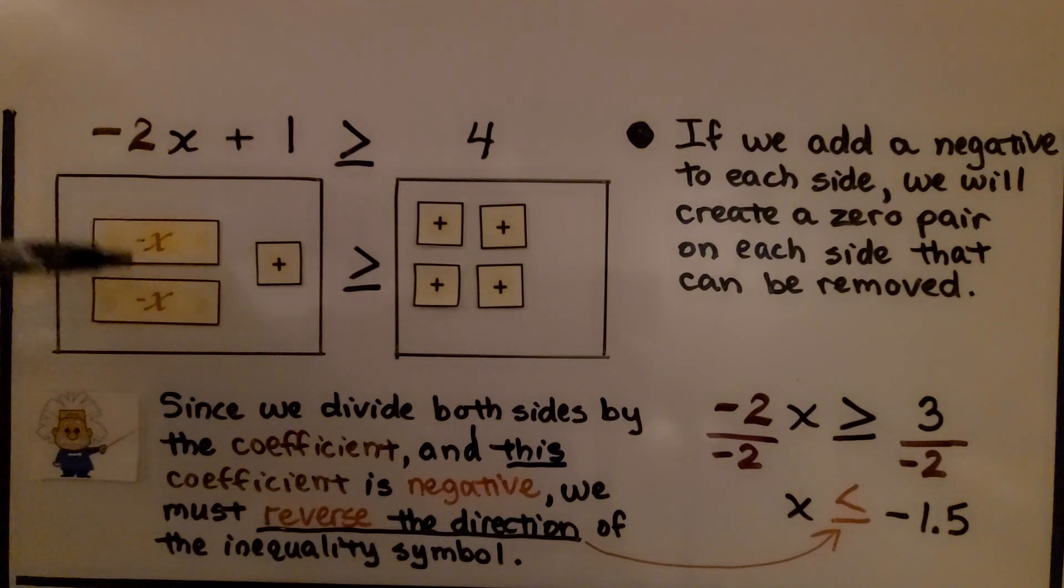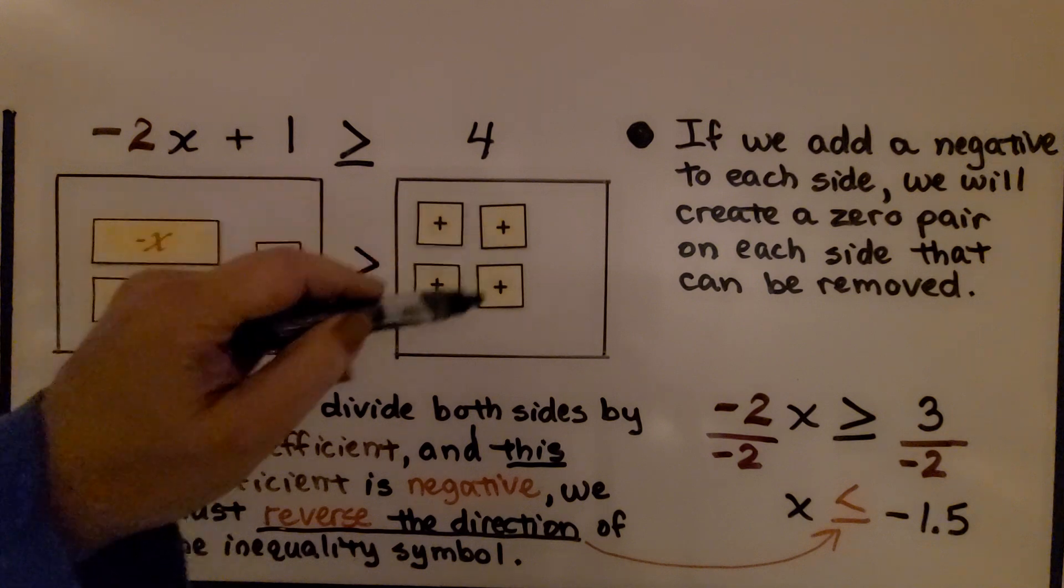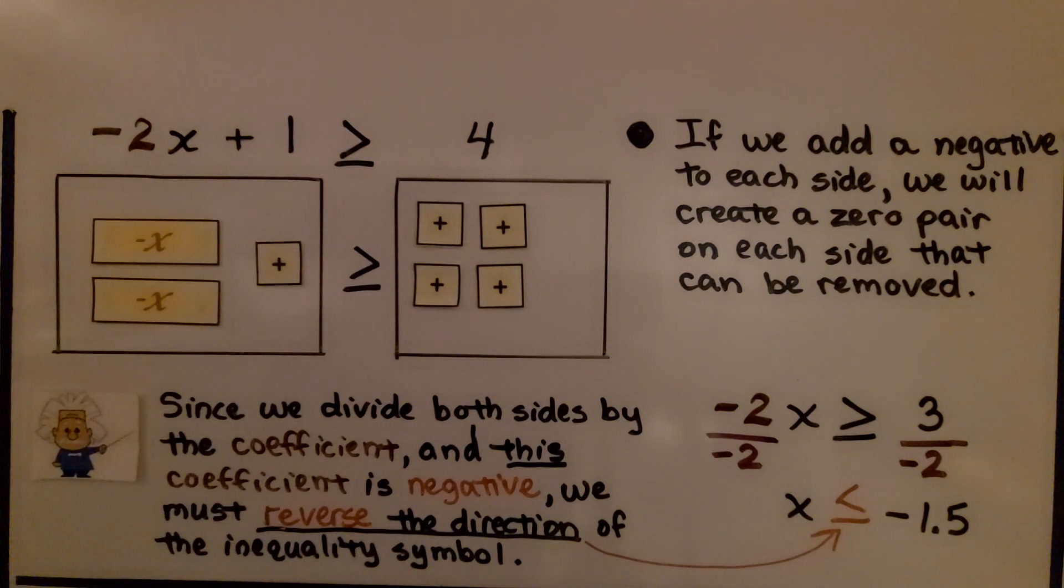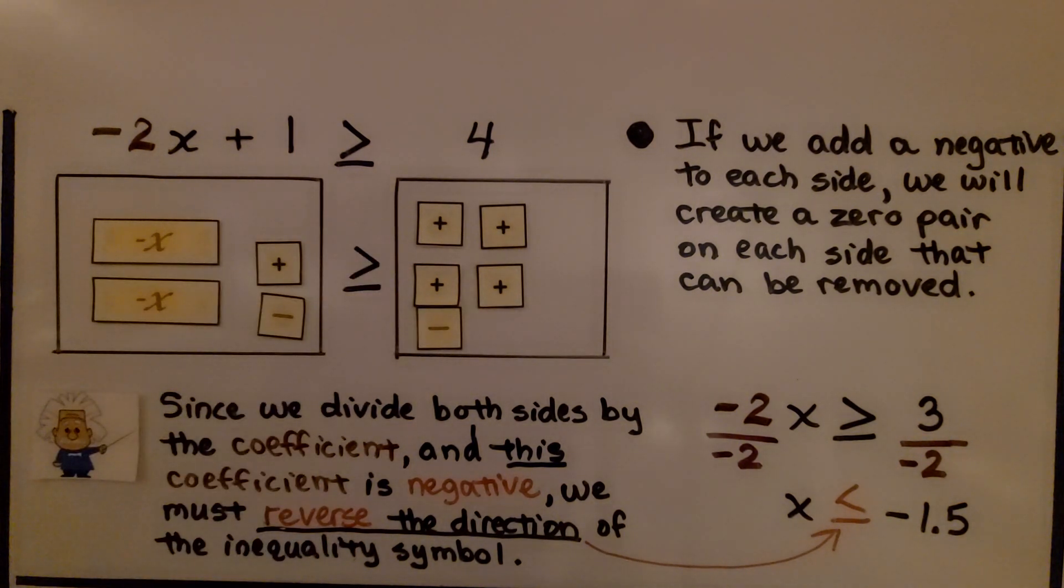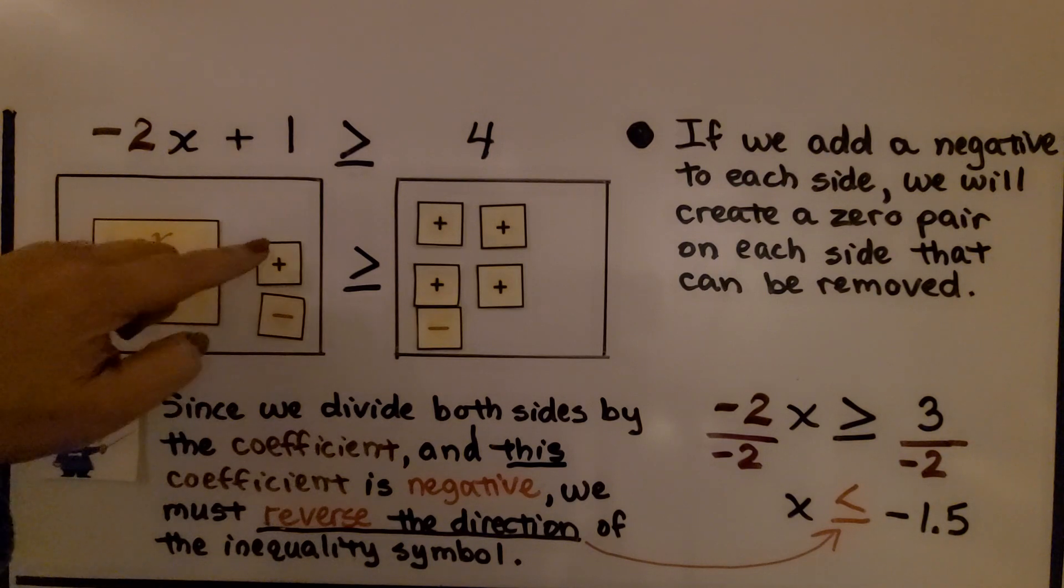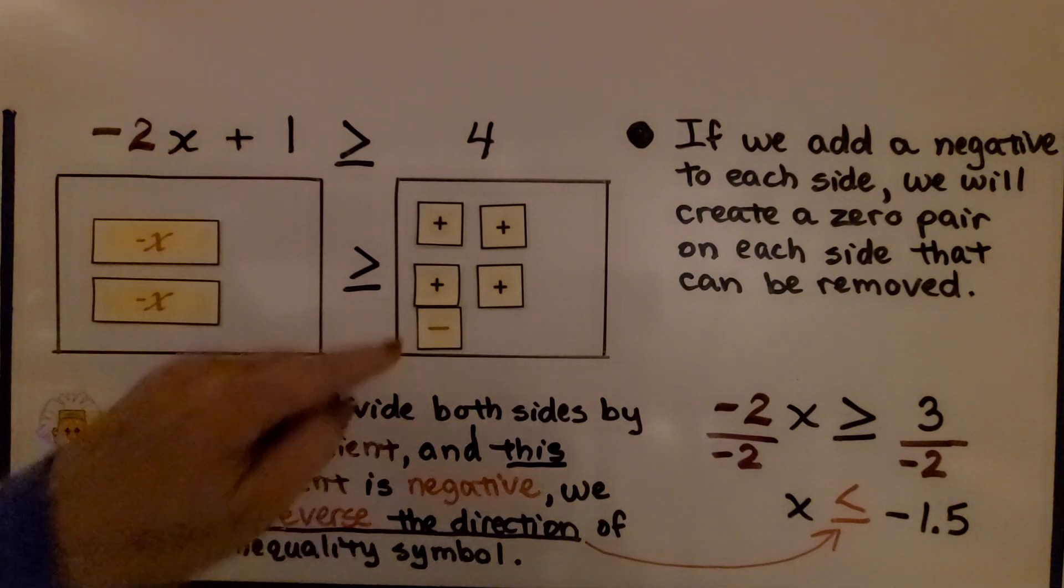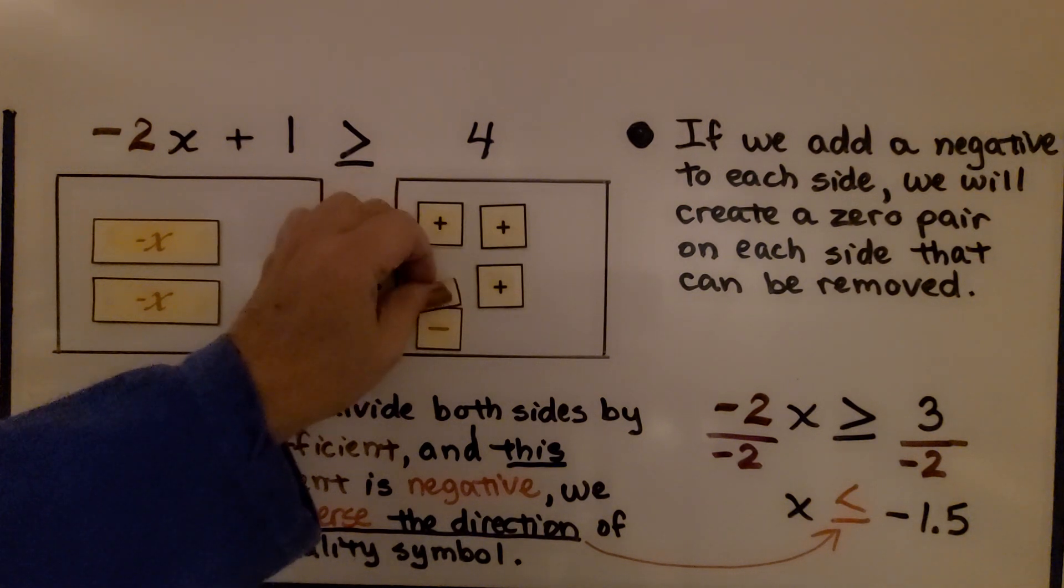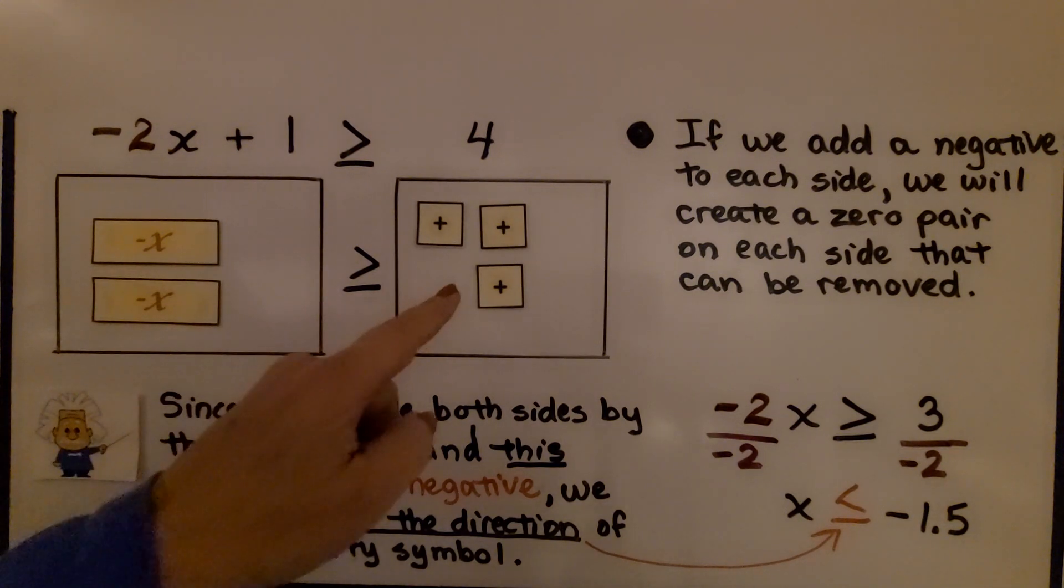Here we have negative 2x plus 1 is greater than or equal to 4. If we add a negative to each side, to each of the mats, we'll be able to create a zero pair on each side that can be removed. We have plus 1 minus 1, we can take that away. And here we have a plus 1 minus 1, that makes a zero pair. We take that away. And we're left with negative 2x is greater than or equal to 3.